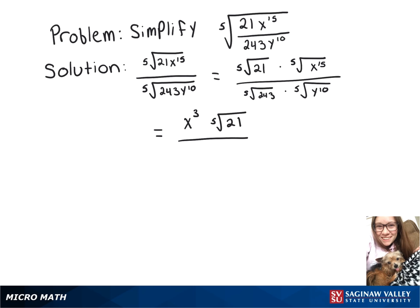And on the bottom, the fifth root of 243 is 3, and the fifth root of y to the 10th is y squared. So here is our simplified answer.